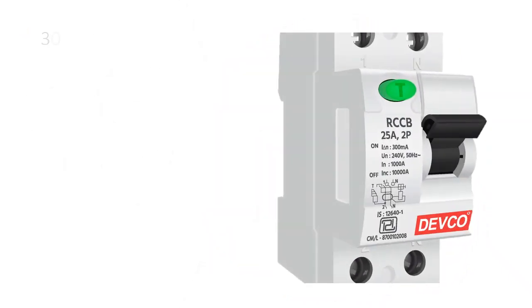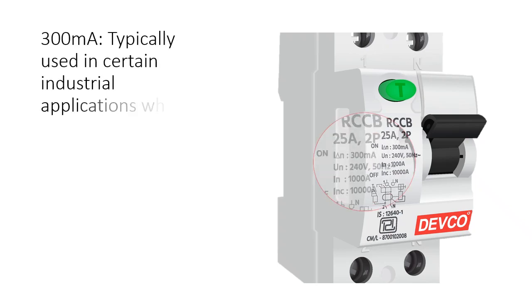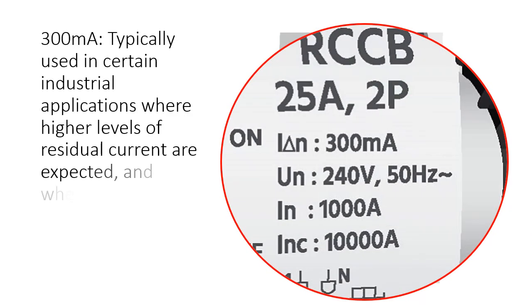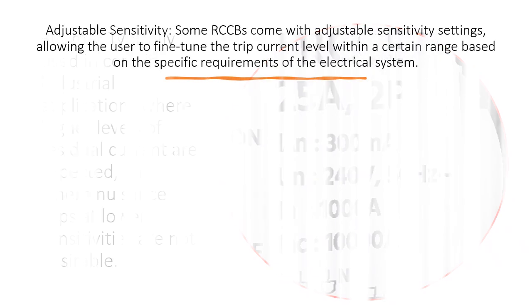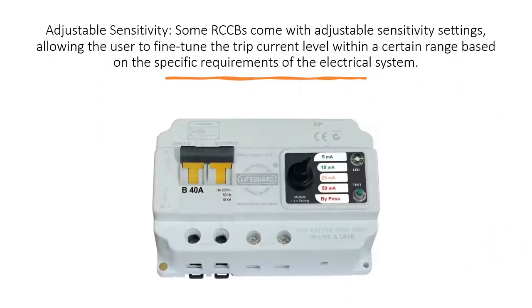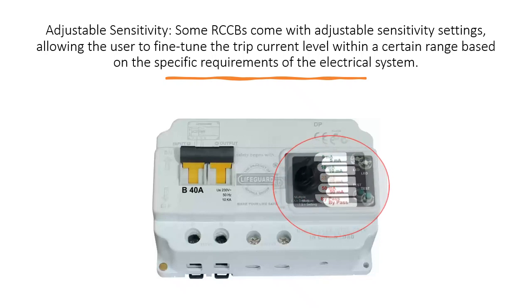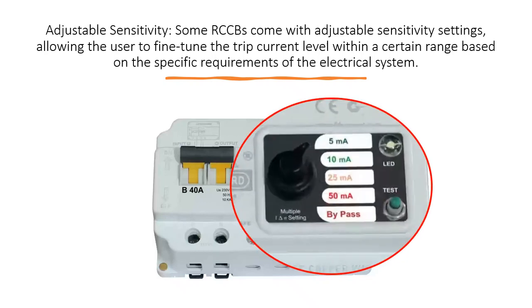300mA is typically used in certain industrial applications where higher levels of residual current are expected, and where nuisance trips at lower sensitivities are not desirable. Some RCCBs also come with adjustable sensitivity settings, allowing the user to fine-tune the trip current level within a certain range based on the specific requirements of the electrical system.